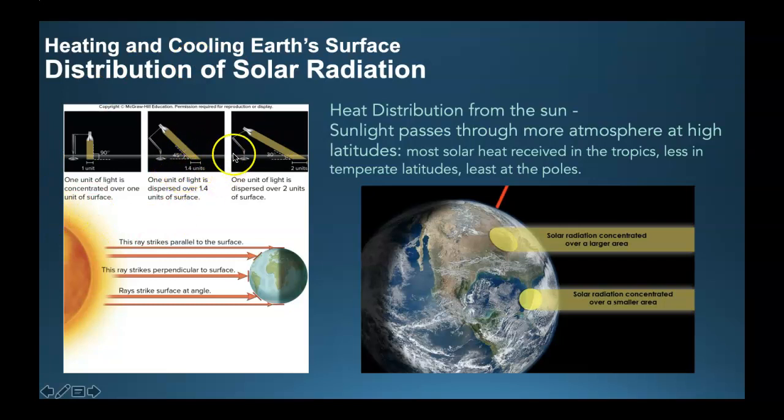If we move it 30 degrees, then that same beam of light that was pointing in one spot at one unit is now spread out over two units. So that is how we have different amounts of solar radiation.